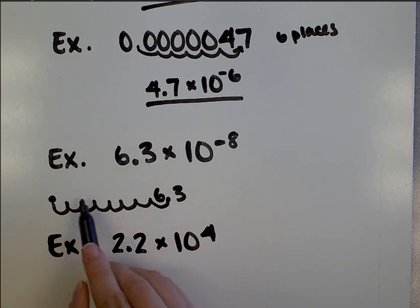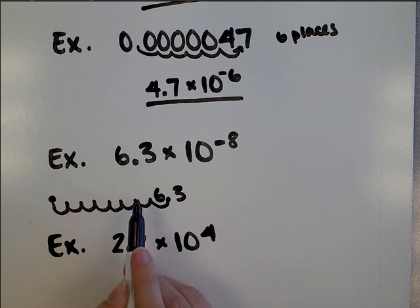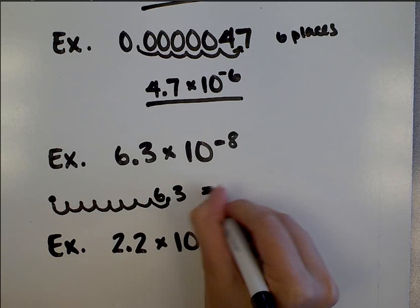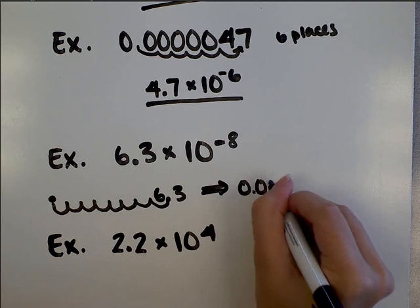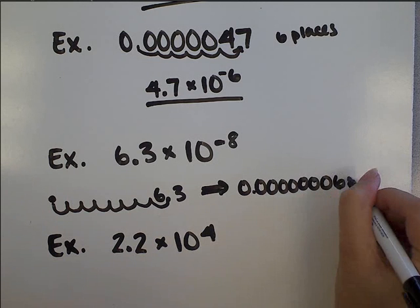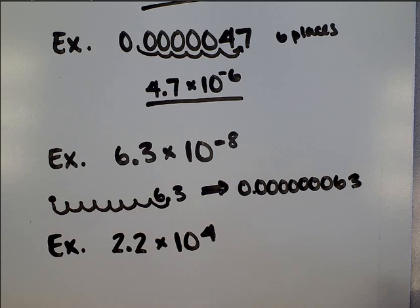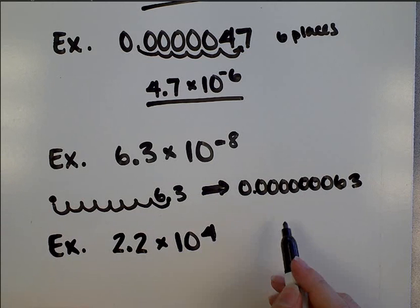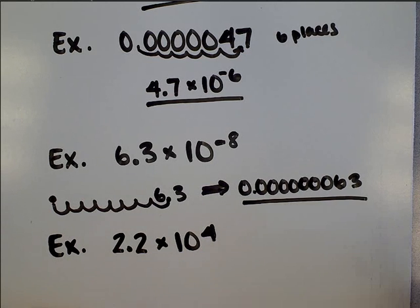That gives me 1, 2, 3, 4, 5, 6, 7 zeros between the decimal point and the 6. Yeah. I like that much better in scientific notation. But if you need it in standard notation, there it is for you.